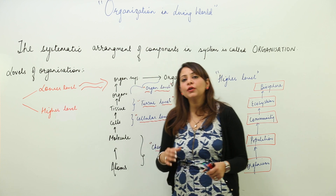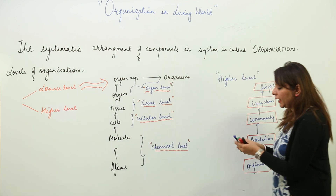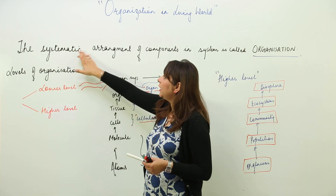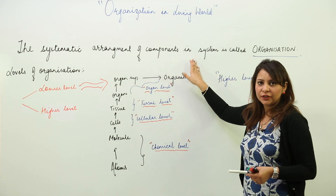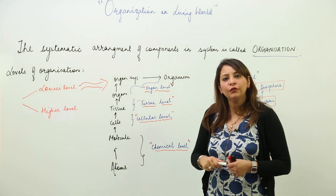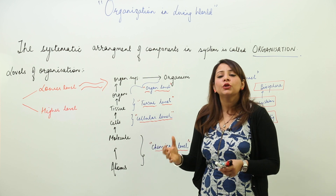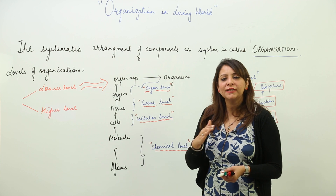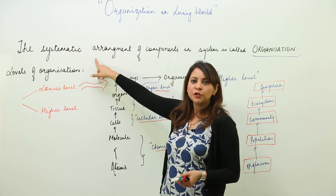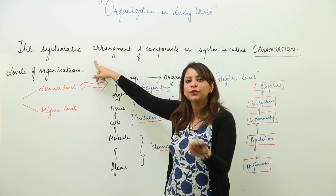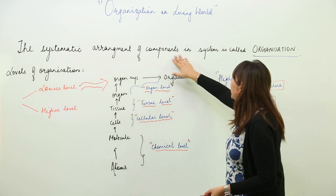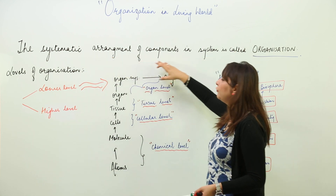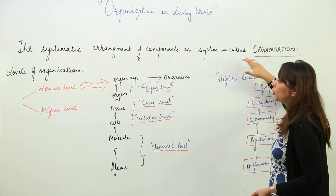First, we should know what we mean by organization. Organization means the systematic arrangement of components in a system. A system is made up of components ranging from smaller to bigger, and we assign them different levels. That systematic arrangement of assigning different levels from the smallest unit to the bigger unit is called organization.